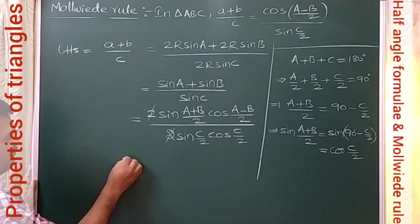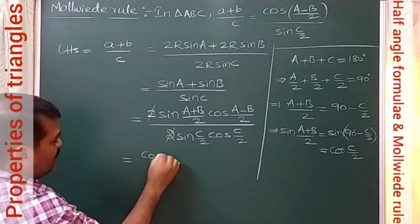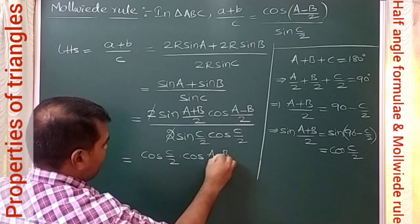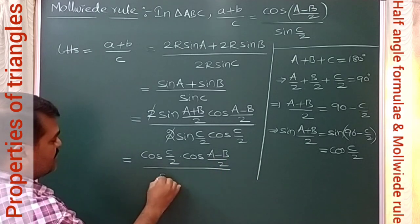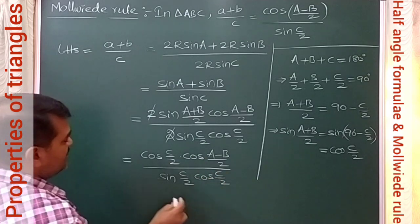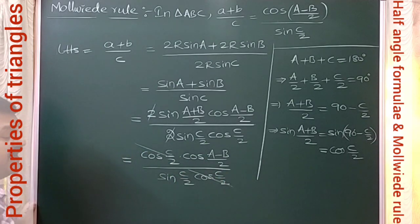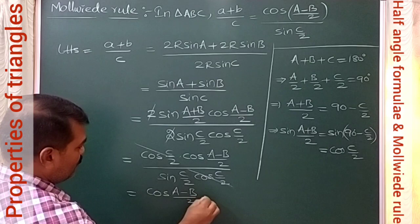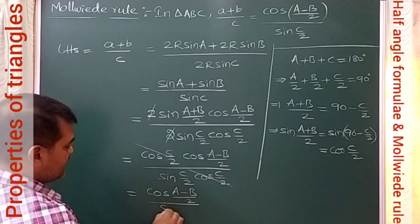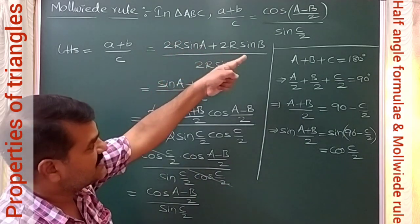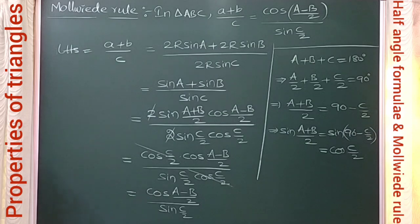Replacing sin((A+B)/2) with cos(C/2) in the numerator, we get cos(C/2) · cos((A−B)/2) in the numerator and sin(C/2) · cos(C/2) in the denominator. Cancelling cos(C/2), we get cos((A−B)/2) / sin(C/2), which is the RHS. Hence proved: (a + b)/c = cos((A−B)/2) / sin(C/2).